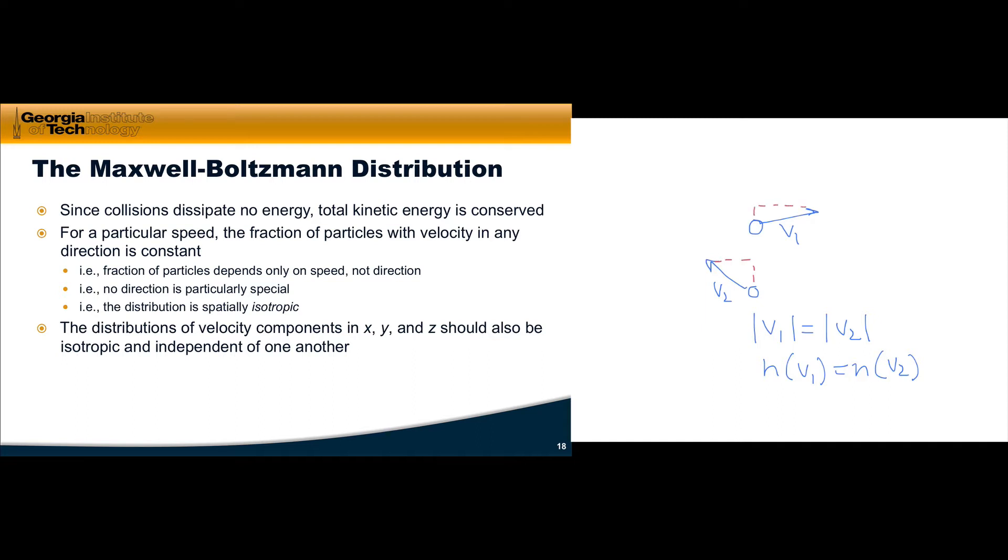So that means we've got an isotropic distribution of the overall velocities, like v1 and v2, and the x velocities, vx1 and vx2, and even for that matter, the z velocities, which we of course can't show here, should also be isotropic.